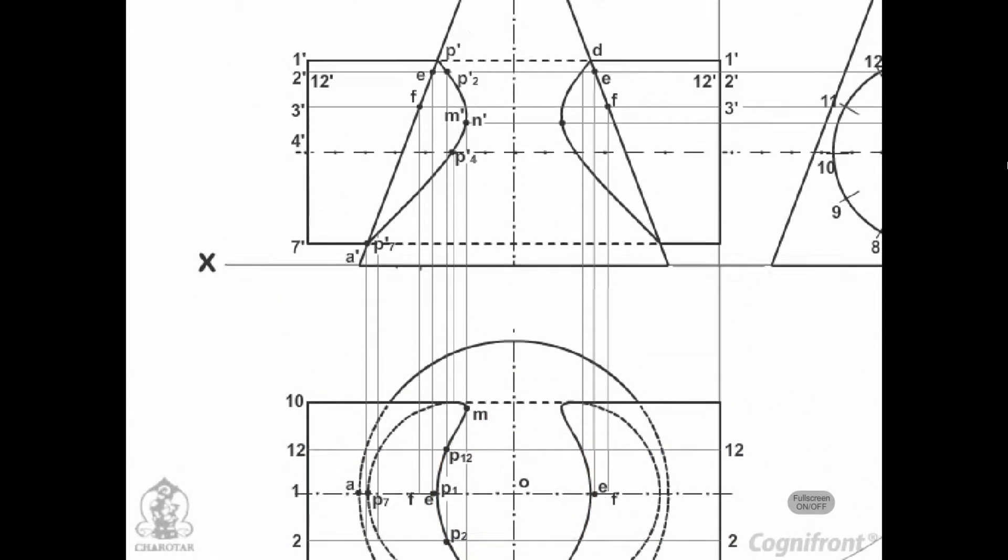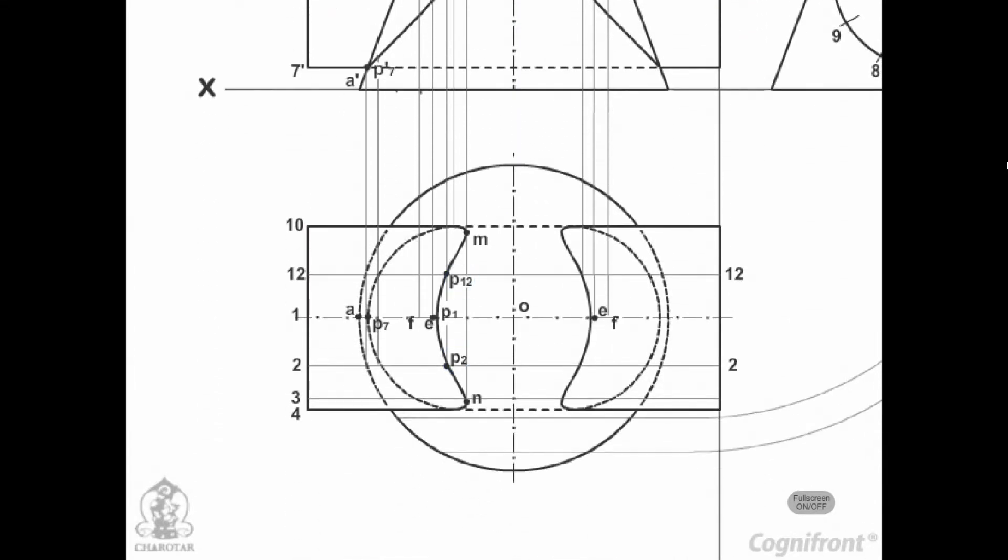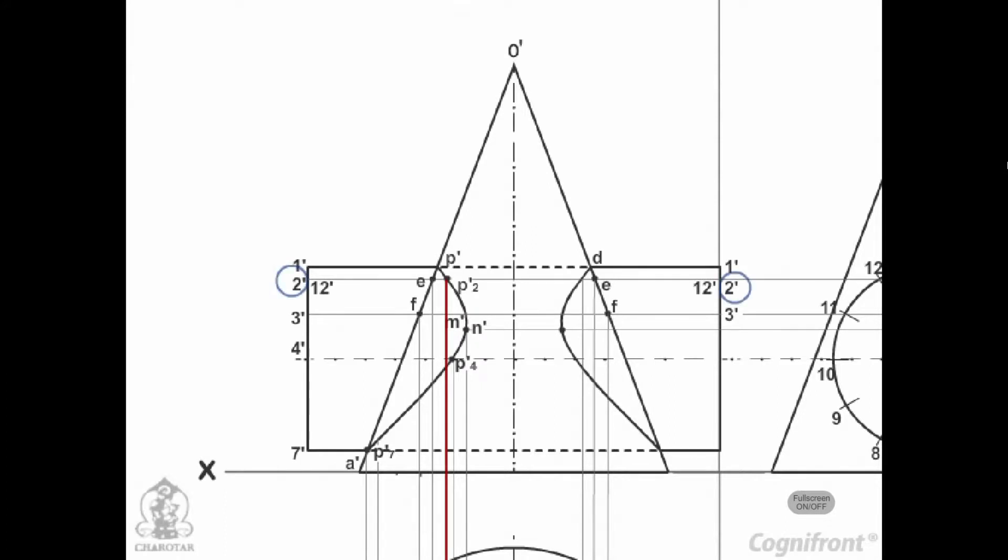In the front view, the cutting plane is seen as a line coinciding with 2-2'. Points P2 and P12, when projected on line 2-2' with which the line 12-12' coincides, will give a point P'2 with which P'12 will coincide. Then P'2 and P'12 are the points on the curve of intersection.